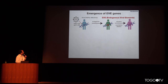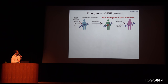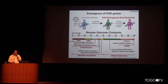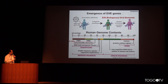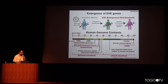Such elements are called EVEs — endogenous viral elements. In human genomes, 8% to 10% of the sequence corresponds to such viral elements. So the fraction of these elements is actually larger than the protein-coding portion of the genome.